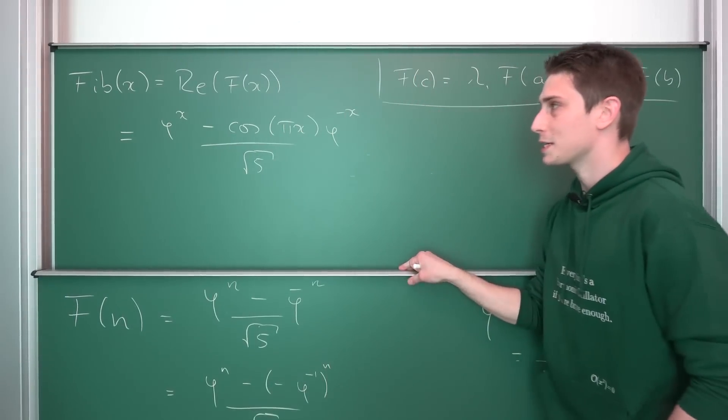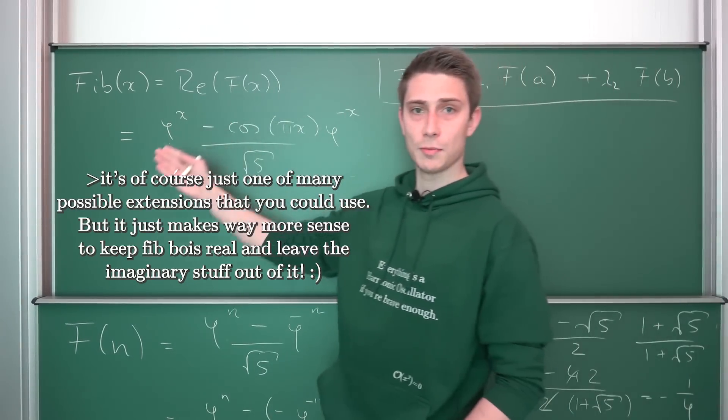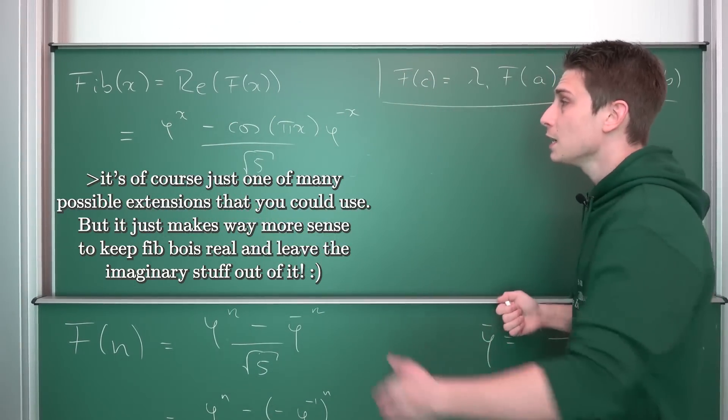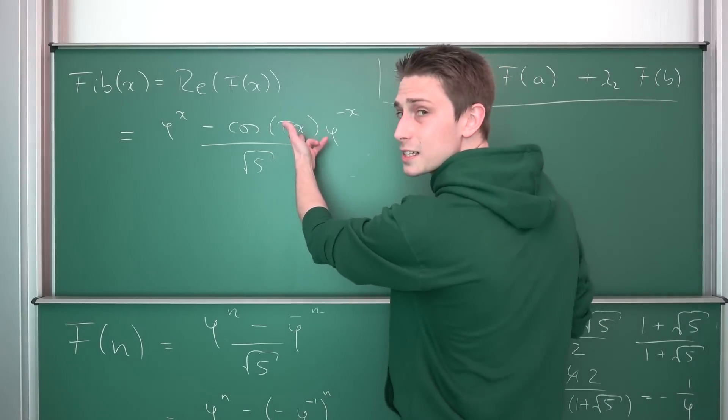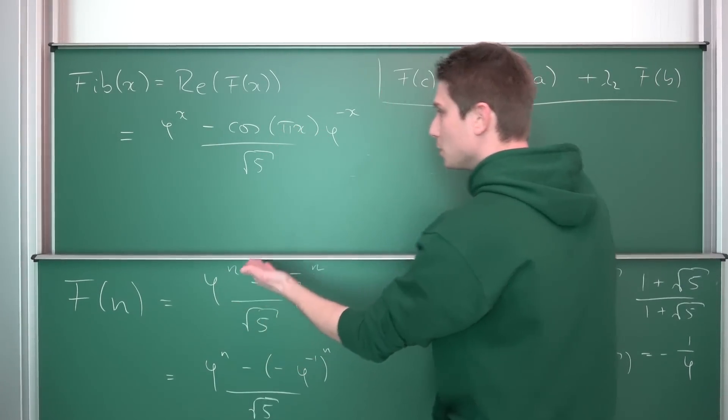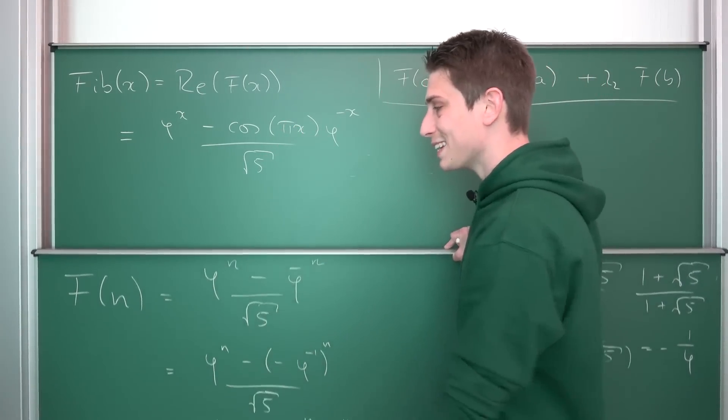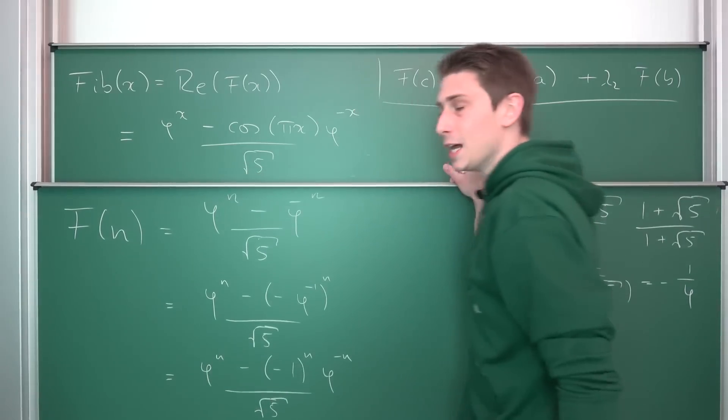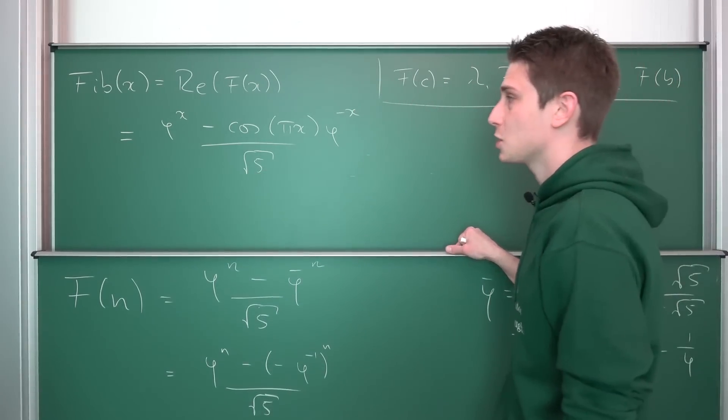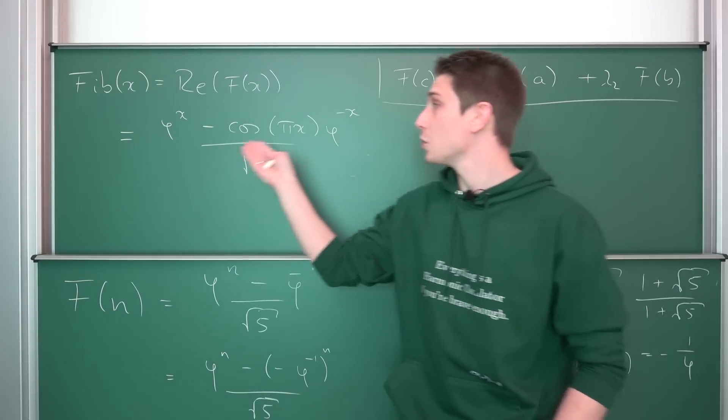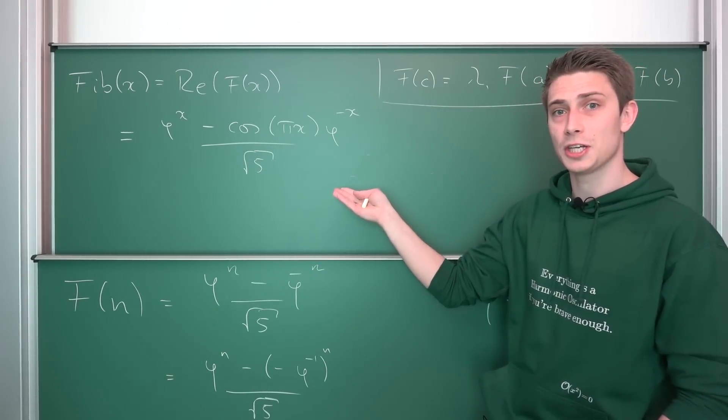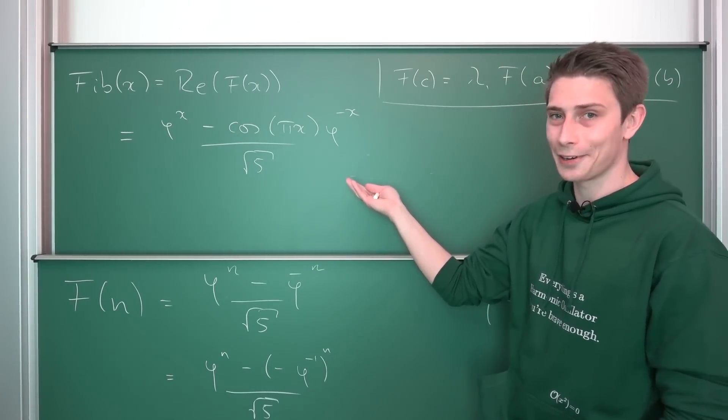This is our extension of our Fibonacci numbers. And the cool thing is, if we were to plug in n's into here, so positive integer values, this actually corresponds yet again with our regular f of n. So this makes up for a nice extension. And with this formula, you can easily find out the half Fibonacci number. But before we get into it, a little animation.